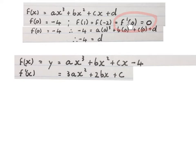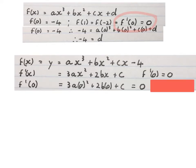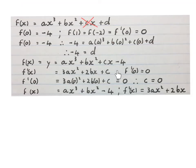Because the first derivative at x = 0 equals 0, we work out the first derivative of the formula and replace x with 0, equating it to 0. If you simplify this, you see that c is equal to 0. Since c is 0, that part of the formula falls away, and the equation and its first derivative now look like this.